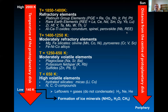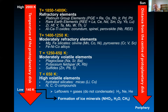As the temperature drops, around 1400 to 1250 kelvins, we have condensation of the moderately refractory elements. That includes magnesium and iron silicates like olivine, also containing manganese, cobalt, and nickel. We also have formation of pyroxenes containing chromium, vanadium, and scandium.